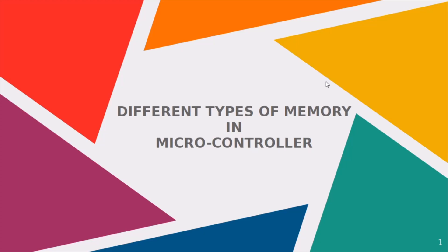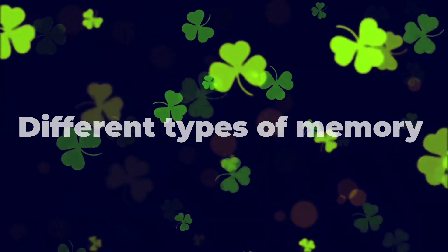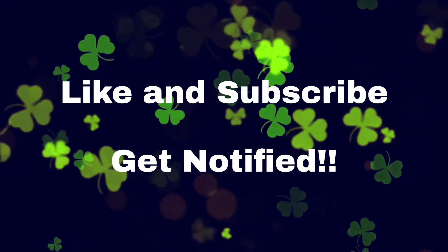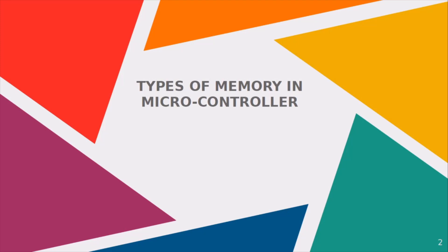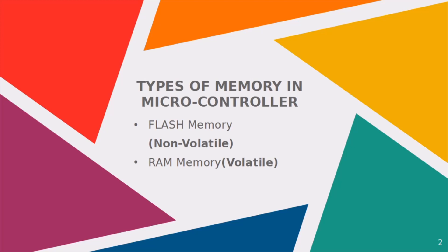Hi, hello guys, this is Vignesh here. In this video we will see about different types of memory in a microcontroller. In a microcontroller there are actually three types of memory. The first one is flash memory, which is a non-volatile memory. The second one is RAM, which is a type of volatile memory. The third one is EEPROM, which is actually a type of non-volatile memory.